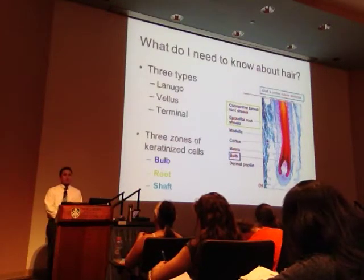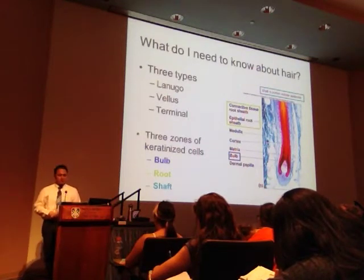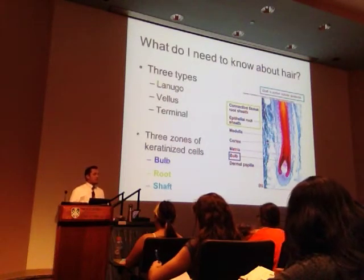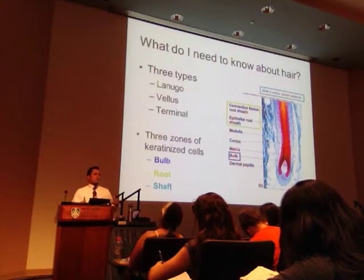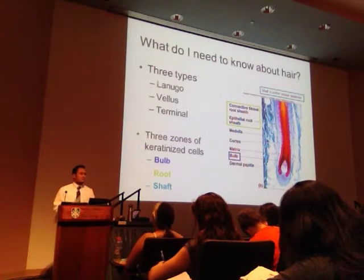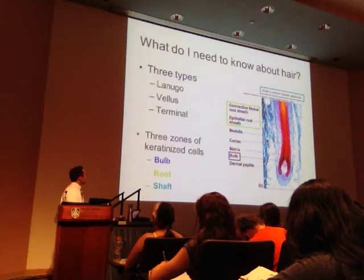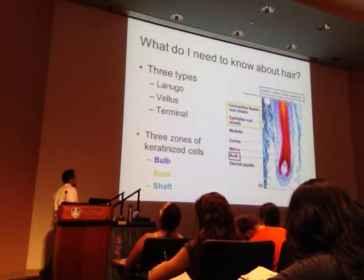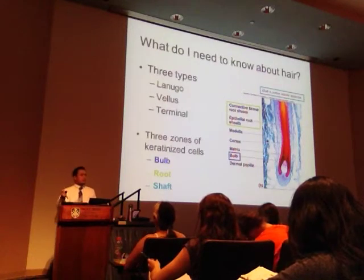Terminal hair is more of what you think of when you think of hair. It's coarse, long, pigmented hair like what you find on the scalp, or in the armpits or the groin. Terminal hair would be in the bearded area of post-adolescent men. We have three main zones of hair, and hair is a keratinized product.